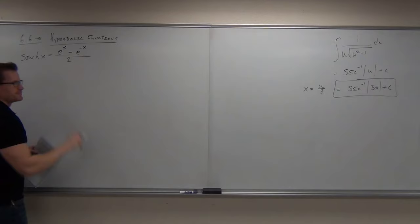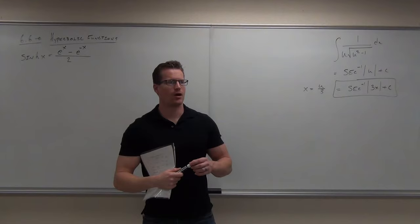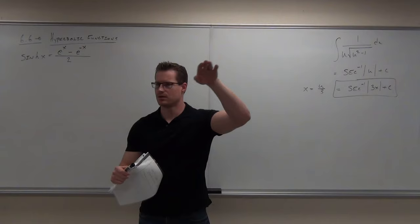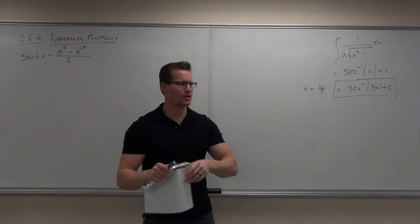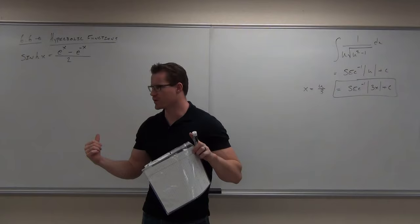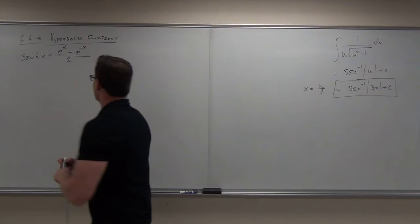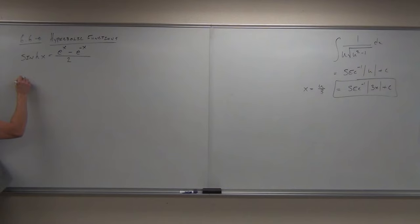It's e to the x minus e to the negative x over 2. What's really interesting: you ever notice how when you drive next to electric wires, how they curve? It's called a catenary. They're actually based on hyperbolic functions — the way a cable hangs between two points is based on this stuff. They use it for engineering all the time. So this is cinch or hyperbolic sine.